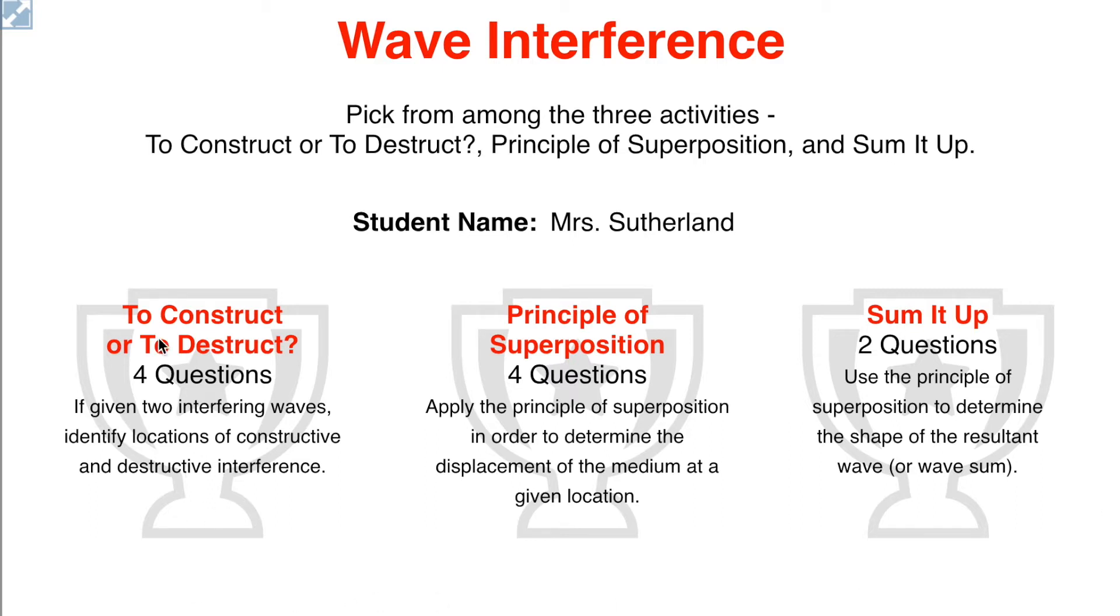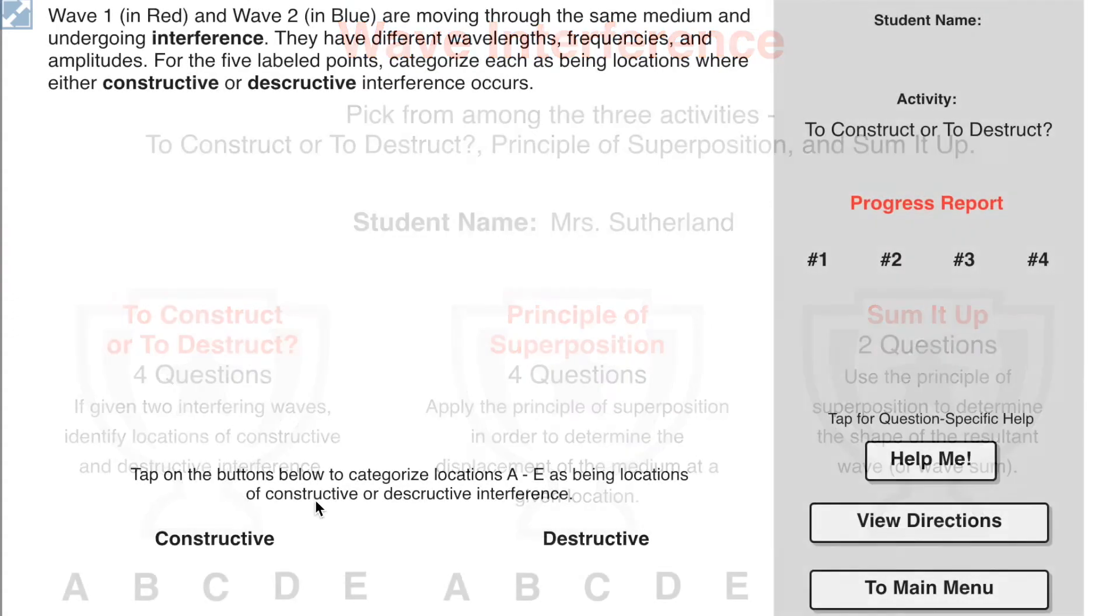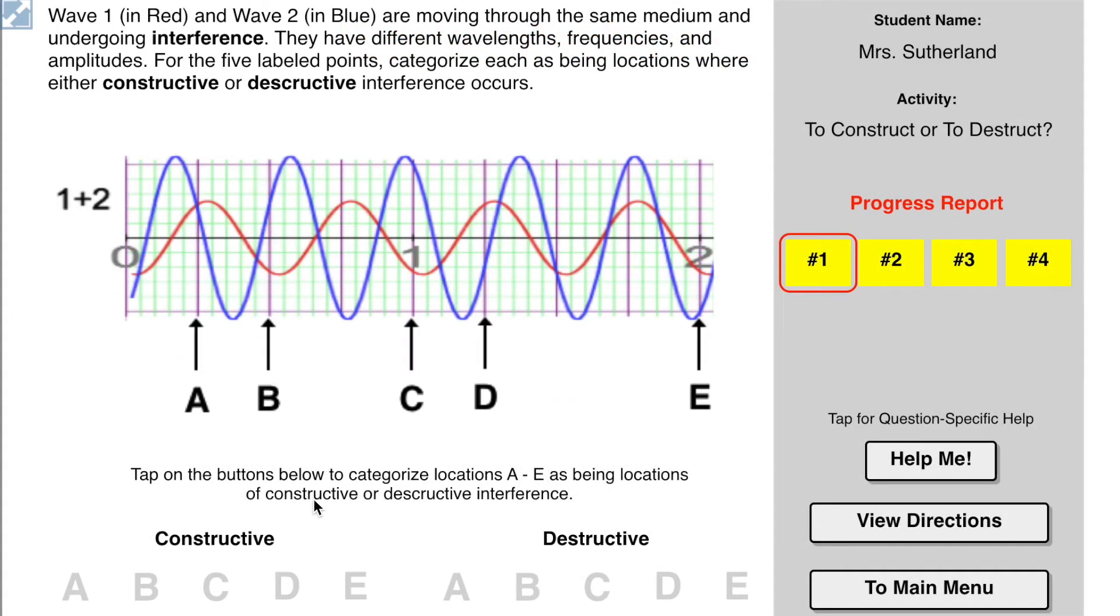So we're going to start here for to construct or deconstruct, and I have wave one in red and wave two in blue are moving through the same medium and undergoing interference. They have different wavelengths, frequencies, and amplitudes. For the five labeled points, categorize each as being located where either constructive or destructive interference occurs.